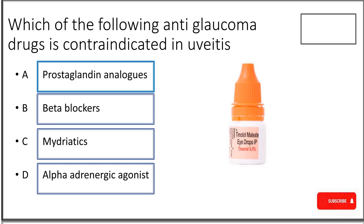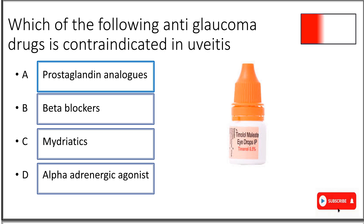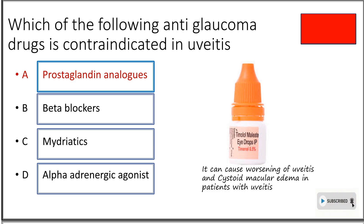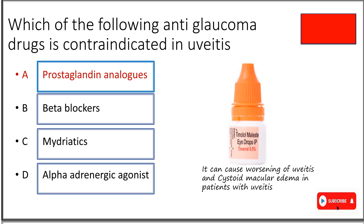Last question: which anti-glaucoma drug is contraindicated in uveitis? Option A prostaglandin analogs, option B beta blockers, option C mydriatics, option D alpha adrenergic agonists. The answer is prostaglandin analogs, because they can cause worsening of uveitis and cystoid macular edema. It is better to avoid prostaglandins in patients who already have uveitis. That's it for today's video — if you like the video, kindly subscribe to my channel.